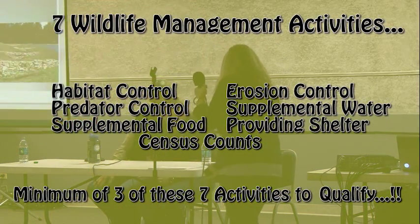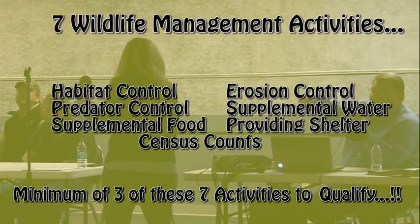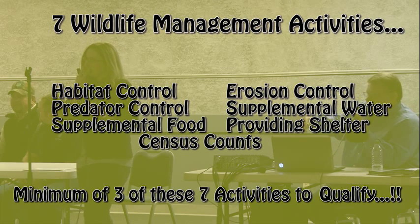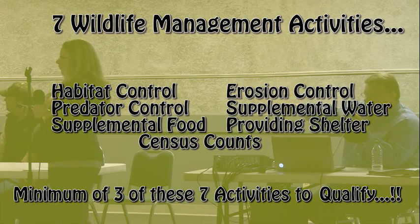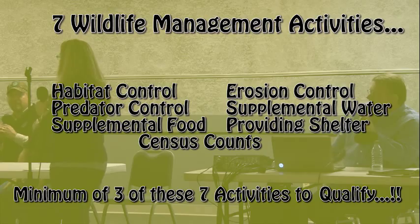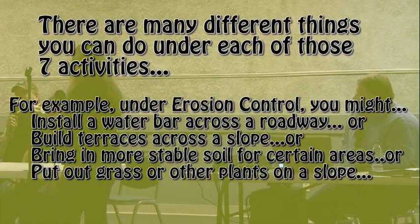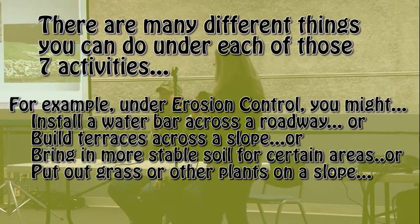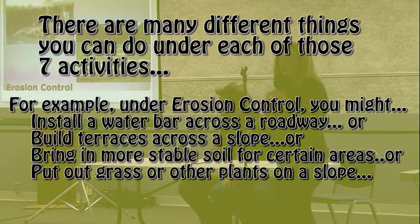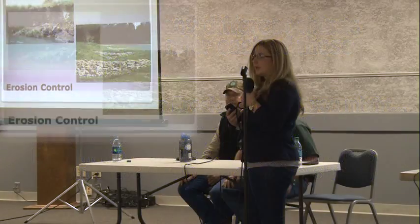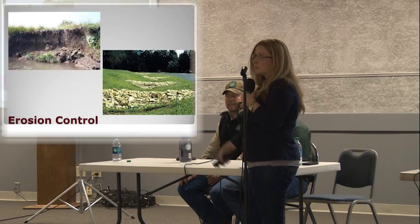Keep in mind, these are the seven wildlife management activities set out by the statute. You only have to do three of those seven — and it might be a certain three this year and a different three a couple of years from now. Each of those seven categories has numerous activities under it, so you just have to pick one activity under three of those seven. A lot of you might already be doing that — we just need some proof of it attached with your plan, and you would already probably qualify.